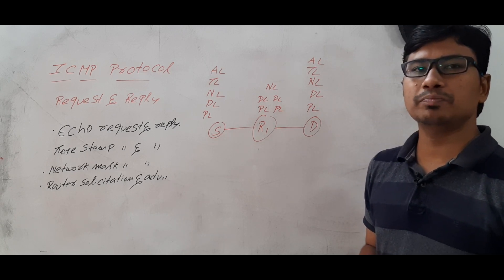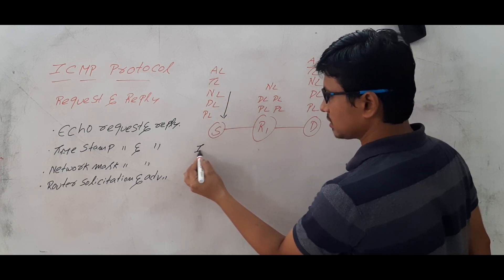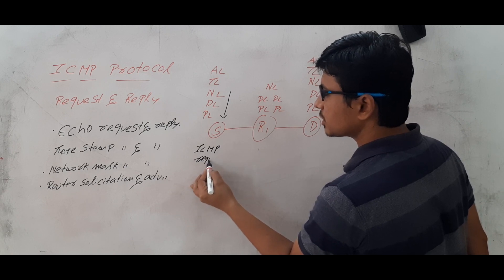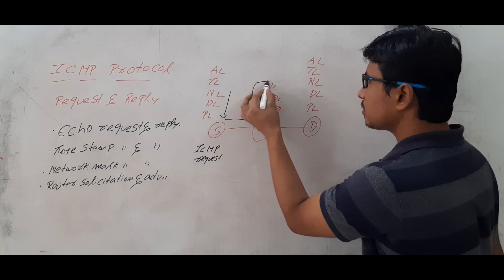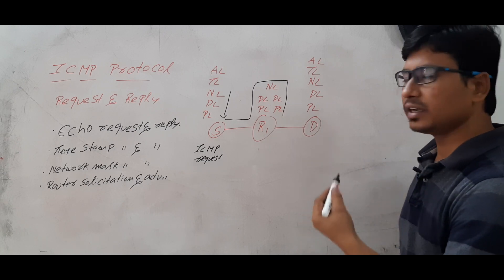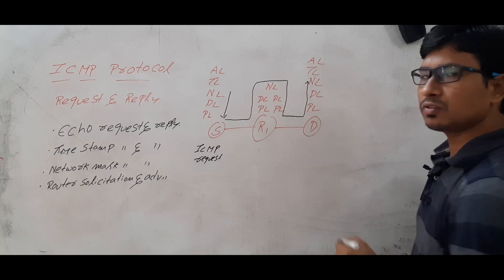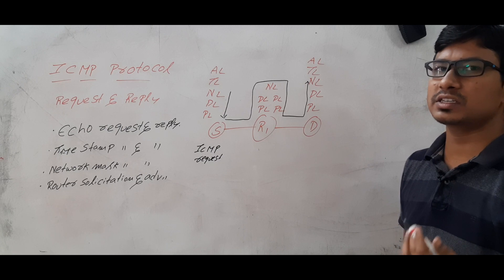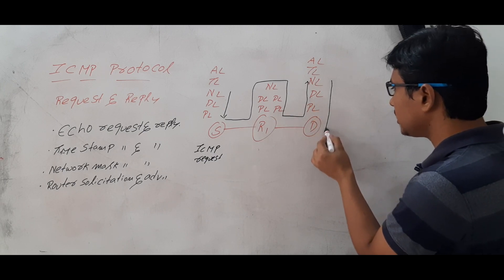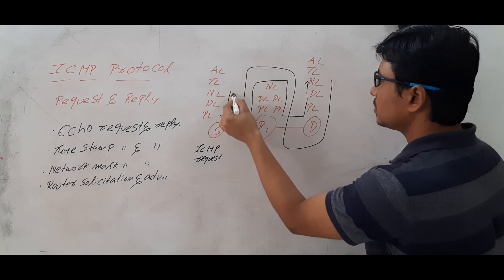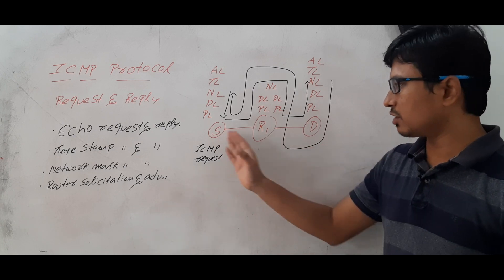ICMP works at the network layer. The source will generate an ICMP echo request packet and send it to the destination via the network layer of router R1 — through physical layer, data link layer, and network layer. Once the request reaches the destination, it will not go to the transport layer or application layer because ICMP works at the network layer. The reply will come back to the source's network layer — so the request and reply packets traverse from the source network layer to the destination network layer.